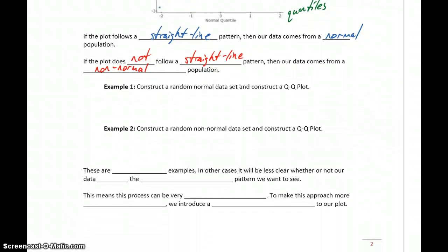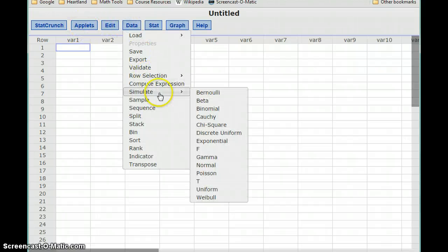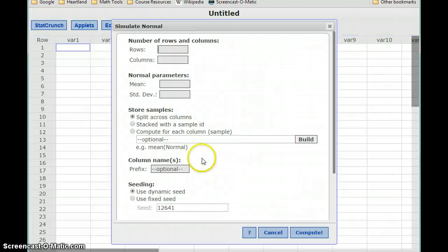So let's take a look at some examples of constructing some QQ plots. What we're going to do first is construct a random set of normal data values. Then we're going to construct a random list of data that don't come from a normal distribution to see what those QQ plots look like. So in StatCrunch, we can go to Data, Simulate, and then Normal. And this will allow us to construct a list of randomly generated values selected from a normal distribution.